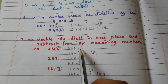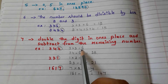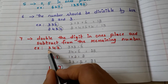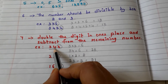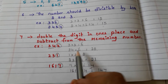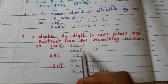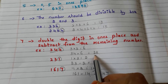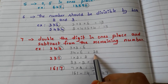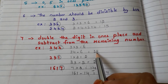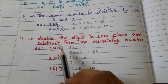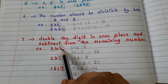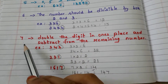We have to subtract this 6 from the remaining number, which is 34. 34 minus 6 is 28. And 28 is a multiple of 7. So, the number 343 is divisible by 7.